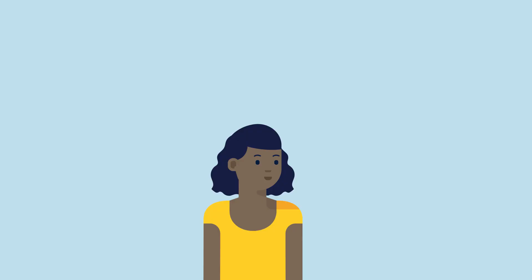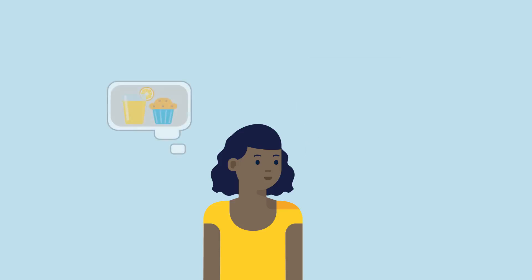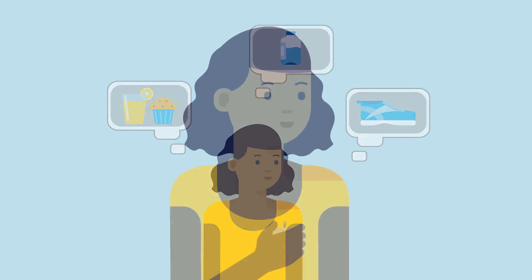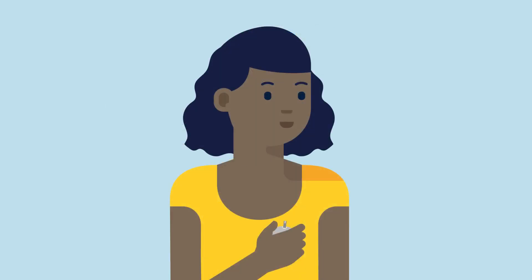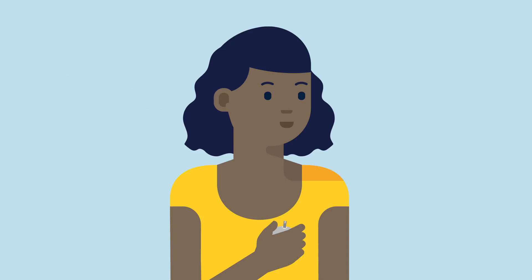Your glucose value constantly changes, going up and down depending on many factors, such as food, insulin, and exercise. And up until now, you have used your blood glucose meter to tell you what your glucose value is. However, your meter can only tell you what your glucose is for that moment.